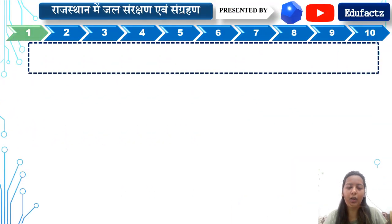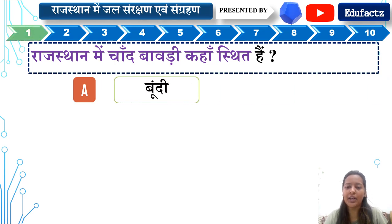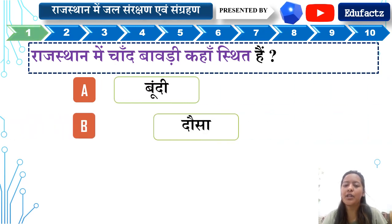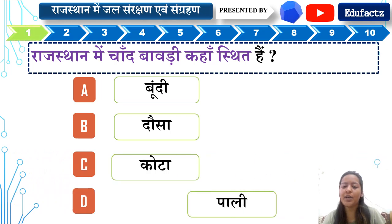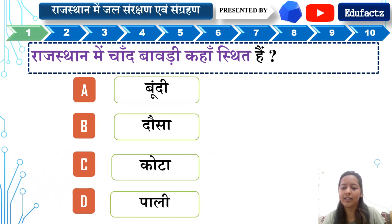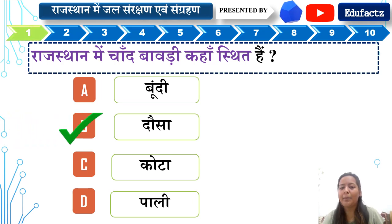Question number one: Where is it in Rajasthan? Option A, Option B, Option C, Option D. The right answer is Option B — Dosa.